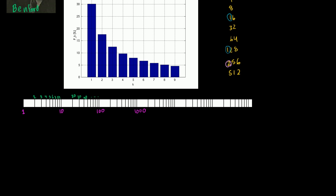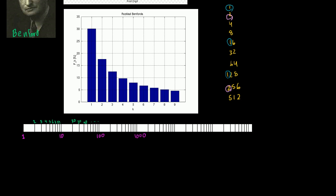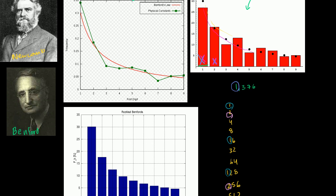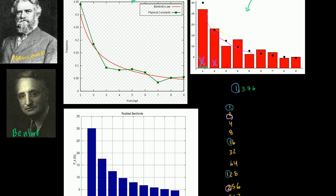So where we left off in the last video, Vi and myself had posed a mystery to you. We had talked about Benford's Law and asked, what is up with Benford's Law? This idea that if you took just random countries and took their population and took the most significant digit in their population, it was much more likely that it would be a 1.